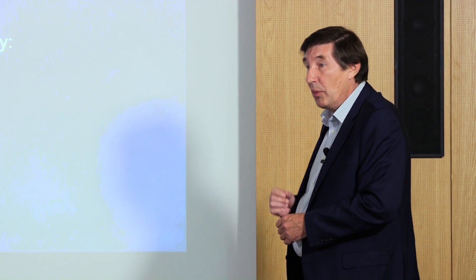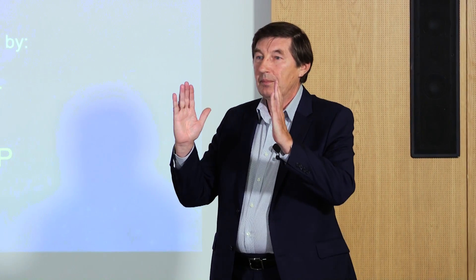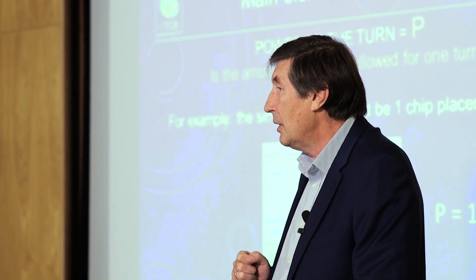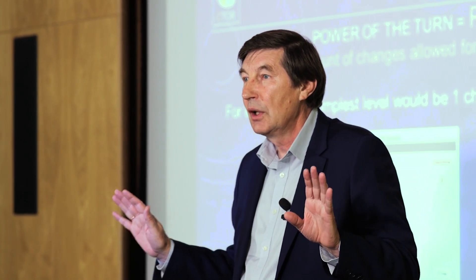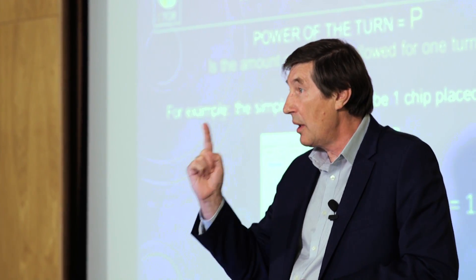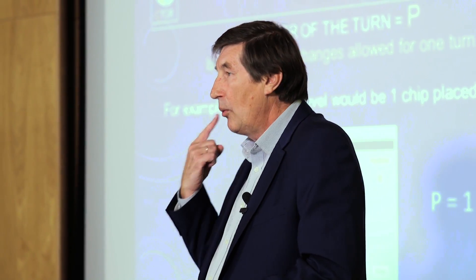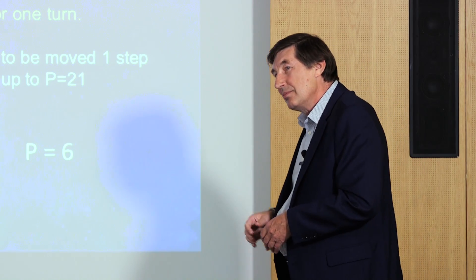That's a very interesting situation. But the third part of our main elements is very important: adjustable complexity. What is adjustable complexity? We have a rule — we can put one chip. If you put one chip on the field, how many squares change color? Absolutely right: one square changes color. Only one. In this case, the power of turn equals one.